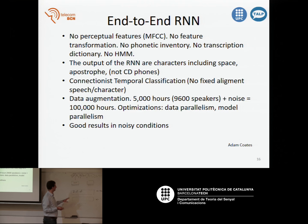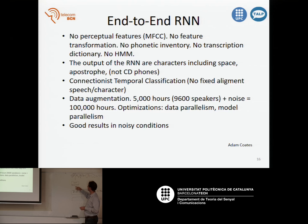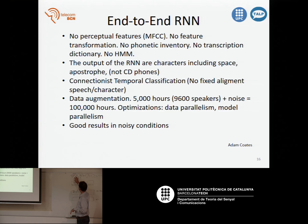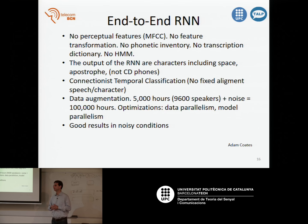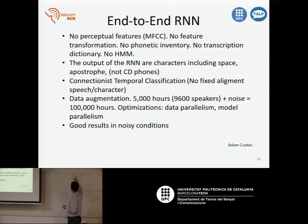Another important difference compared to previous systems is that there is no alignment connection between the input and the output. In previous systems, when we tried to train the deep neural network for phonetic classification, we started with a classical system based on Gaussian mixture models or a simple system, and tried to have this alignment between frames and phonemes. We trained these networks with a training database where we have the frames and have decided what phoneme is present in each frame — this is a segmentation problem in phonemes that we had to do with our previous systems using a classical speech recognition system.